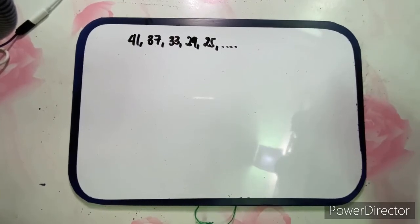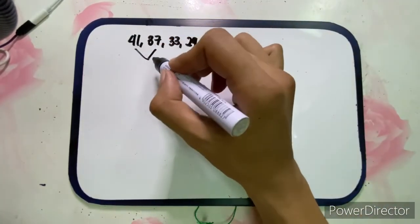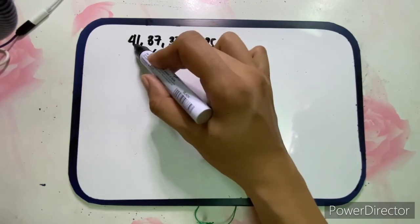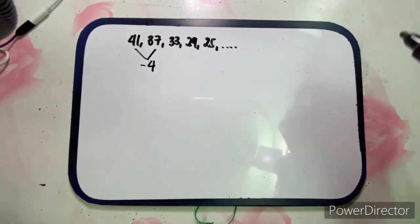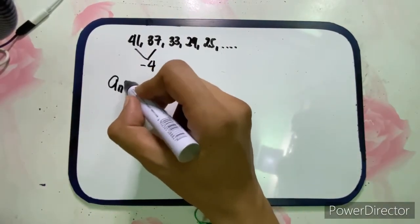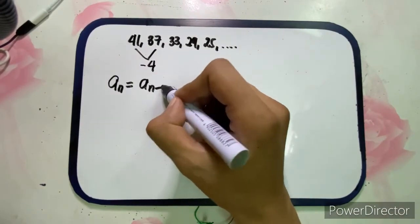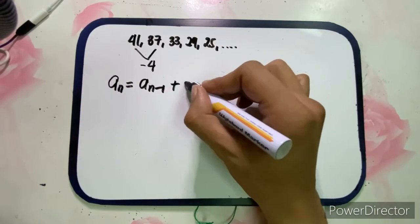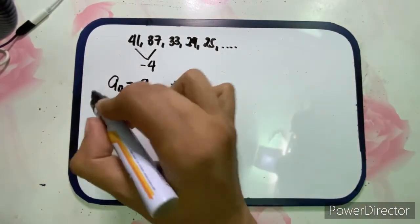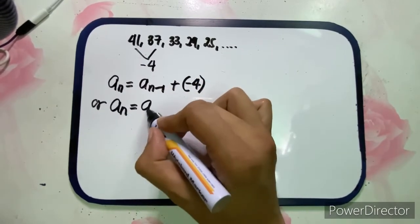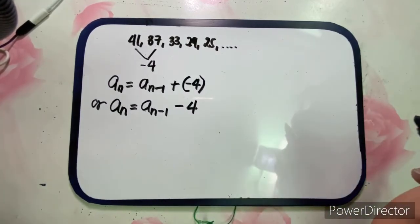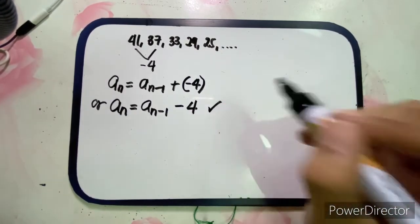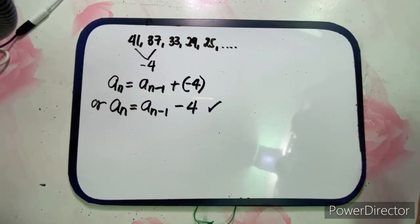For the third example, we have the sequence 41, 37, 33, 29, 25. The common difference is negative 4, because 37 minus 41 is negative 4. So negative 4 is our common difference or step up. The recursive formula is: a sub n equals a sub n minus 1 plus (negative 4), or equivalently, a sub n equals a sub n minus 1 minus 4.